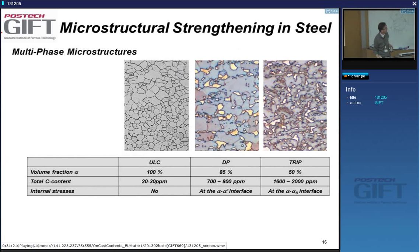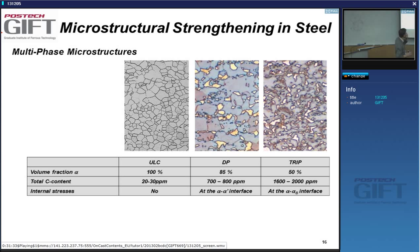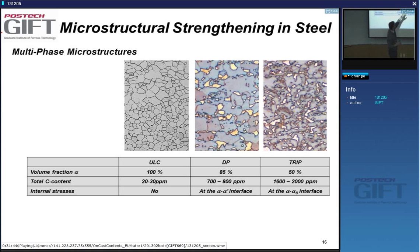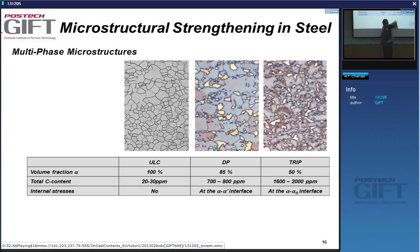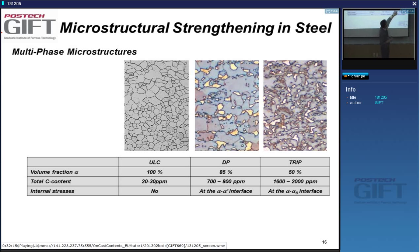When you look at these microstructures — comparing ultra-low carbon steel, dual phase steel, and TRIP steel — you can ask how much ferrite each has. The ULC steel has 100% ferrite. DP steel typically has 10 to 15% martensite, so 85% ferrite. In the TRIP steel, ferrite is reduced to about 50% because bainite is also present. The carbon content is very low in ULC steel; more carbon is needed in DP to make the martensite phase. In TRIP steels, the carbon is all in the bainite phase.